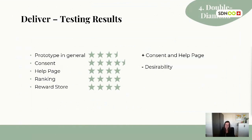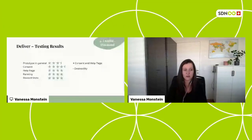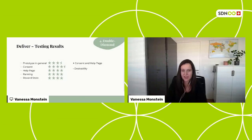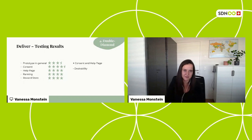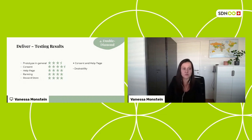On a scale of one to five, the experts rated various parts of the prototype — the prototype in general, the consent page, the help page, the ranking, and the reward store. They did really like the consent page and the help page, considering them an added value. However, the experts highlighted that the desirability of such a solution needs to be extensively talked about and tested with the members. To know how much potential there really is, you'd have to go into the community, show it to members, do user tests, and find out if the desirability is really given.